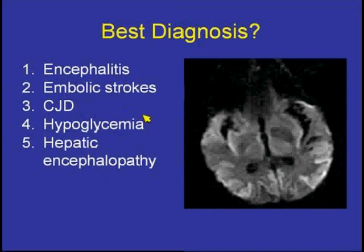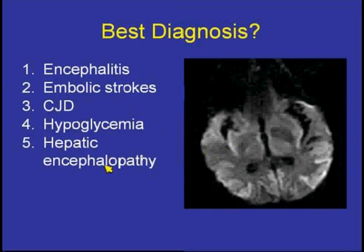Best diagnosis shown on the diffusion-weighted scan — would that be encephalitis, embolic strokes, CJD, hypoglycemia, or hepatic encephalopathy?